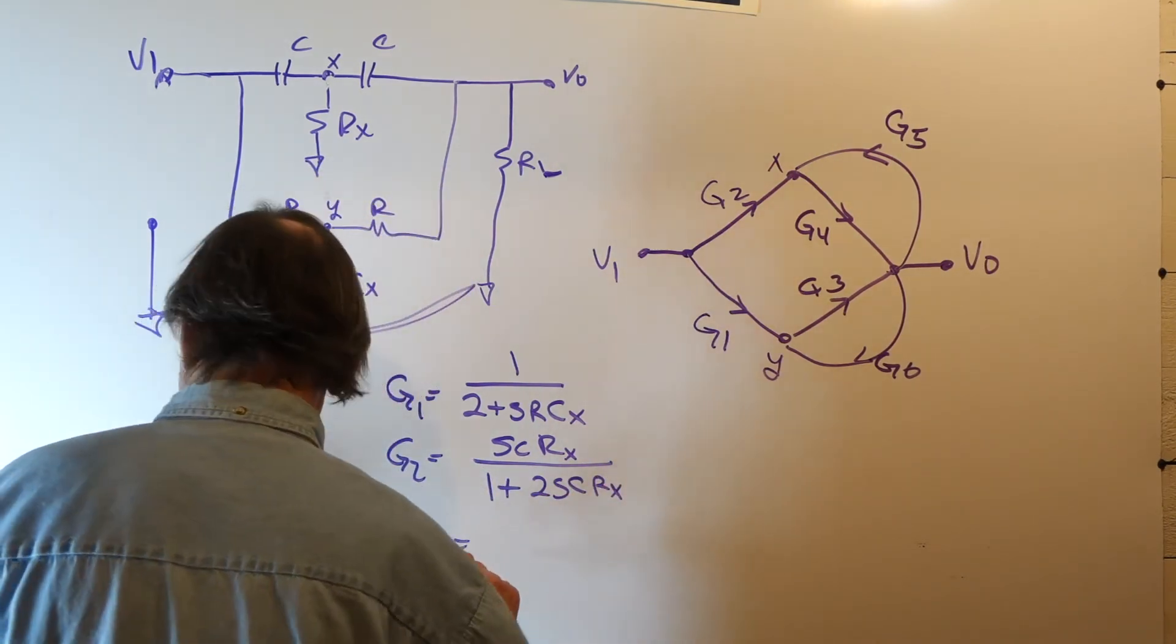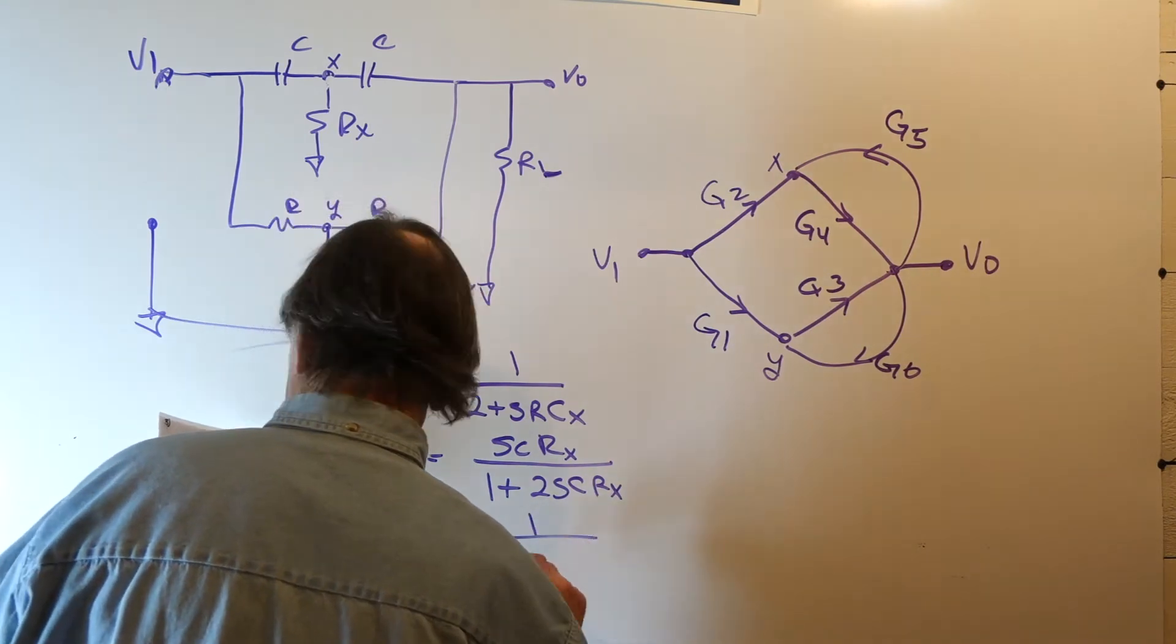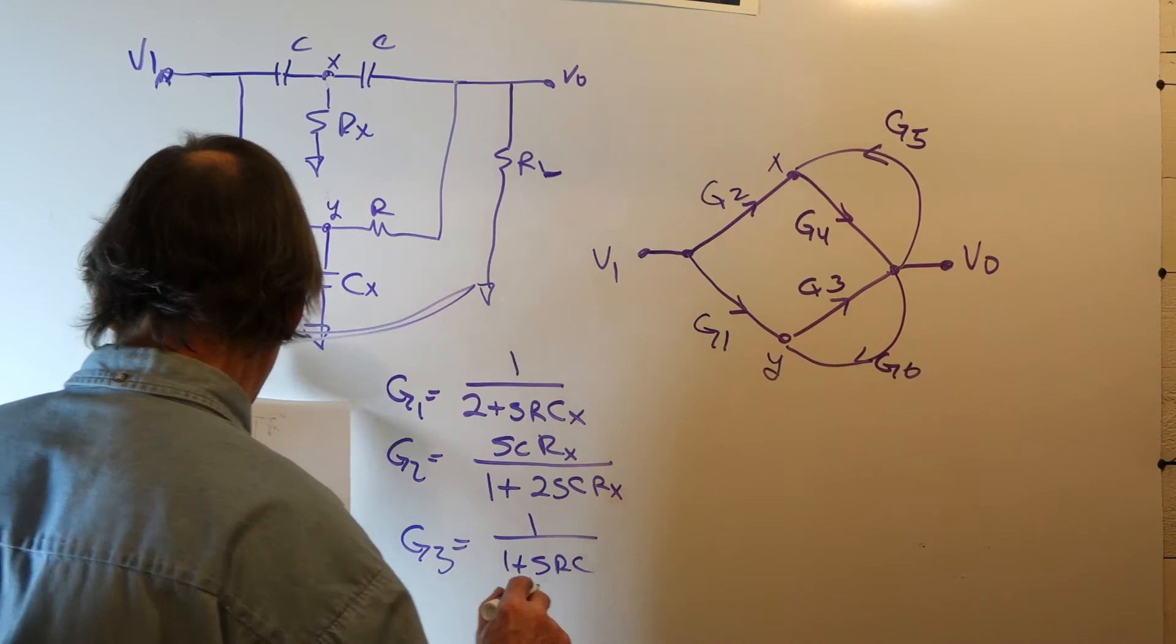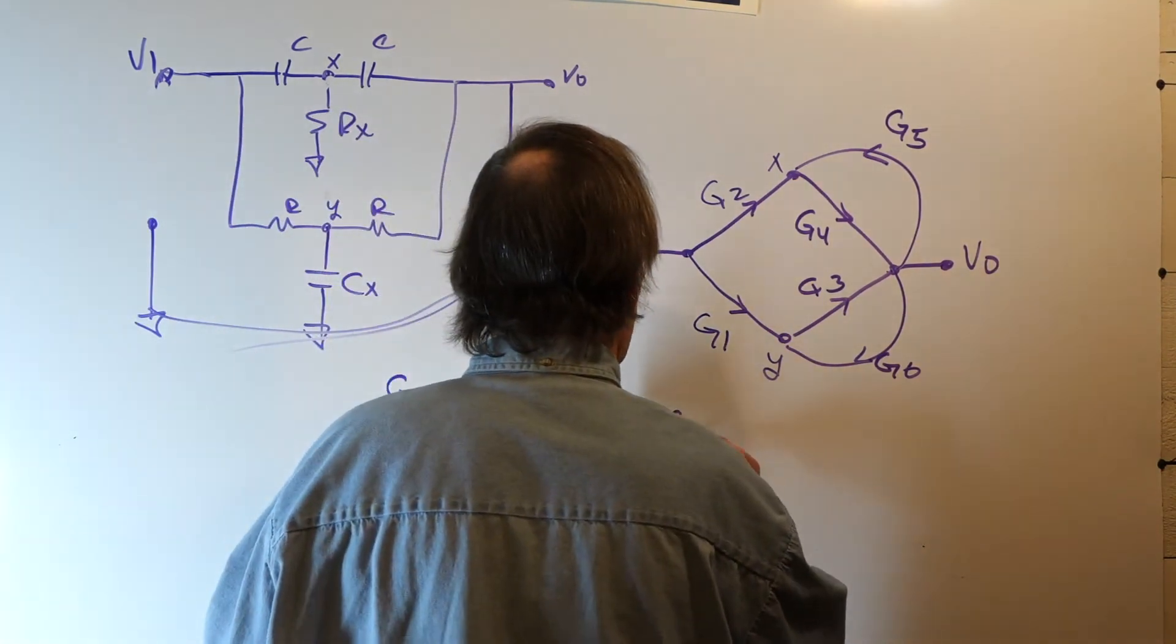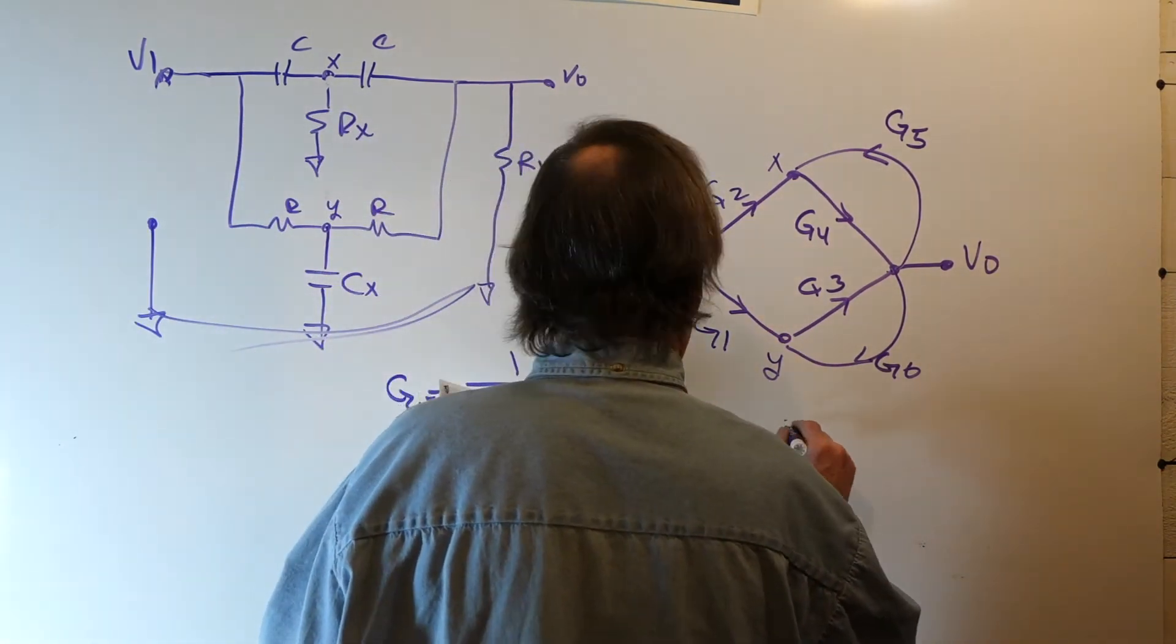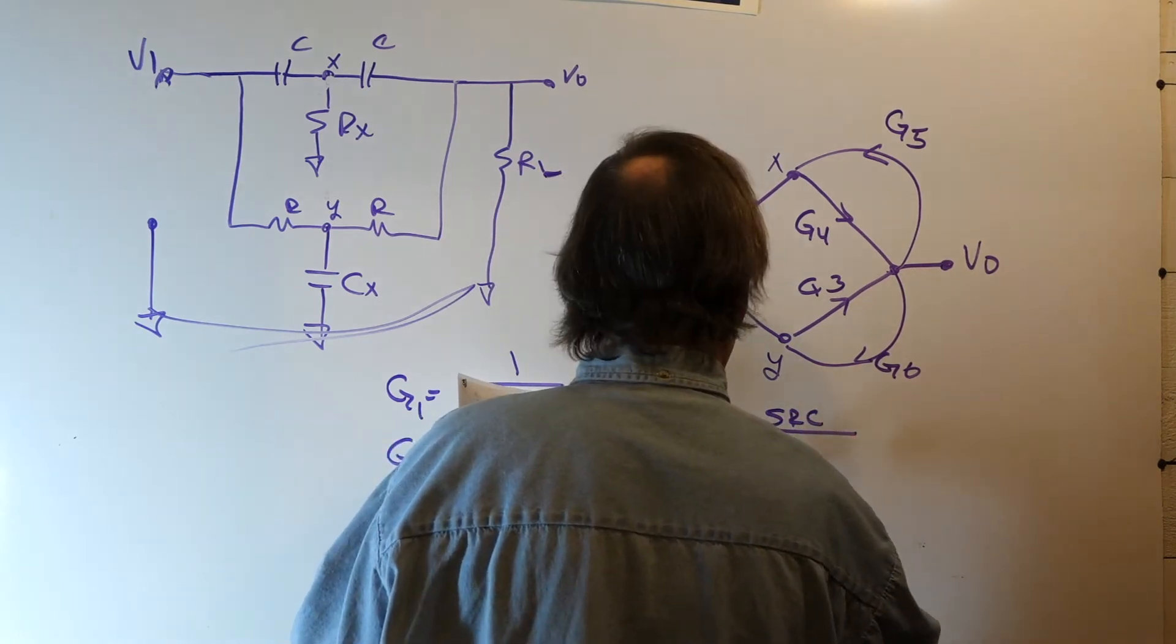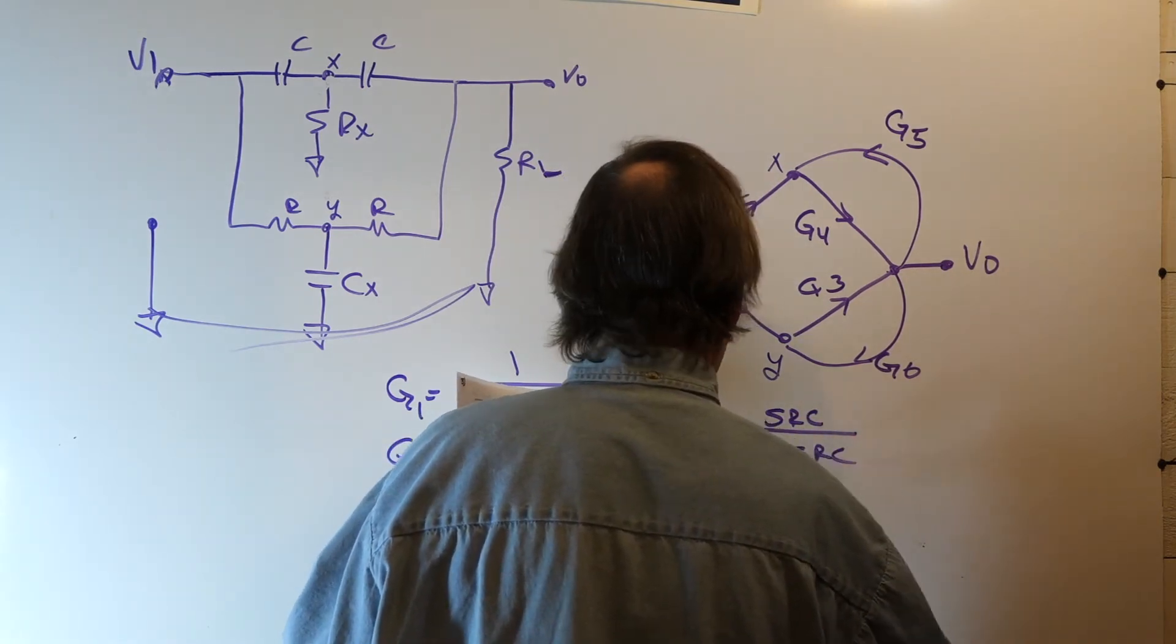gain 3 is 1 over 1 plus SRC, gain 4 is SRC over 1 plus SRC,